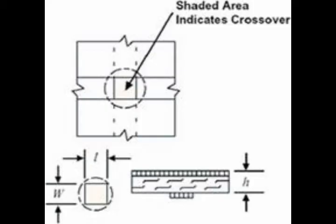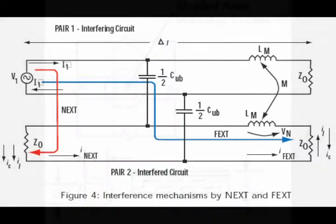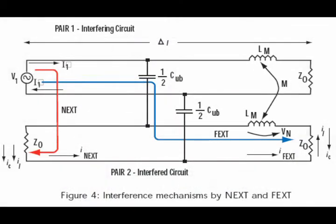The coupling due to capacitive effects, electric field energy, causes a small reproduction of the active signal to be sent to both the far and near ends of the receptor line. The capacitively coupled pulses are the same polarity as the signal in the source line. The inductive coupling, magnetic field energy, causes a signal of the same polarity as the source signal to be coupled to the near end of the receptor, and a signal of the opposite polarity as the source signal to be coupled to the far end of the receptor.